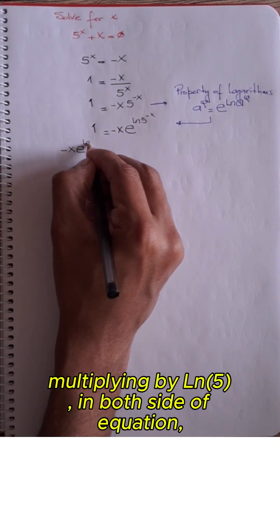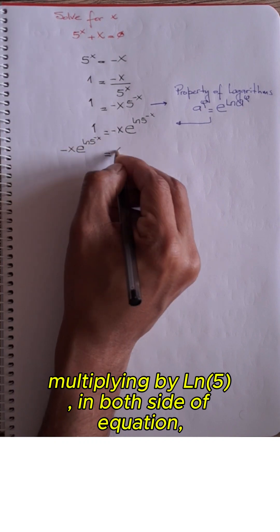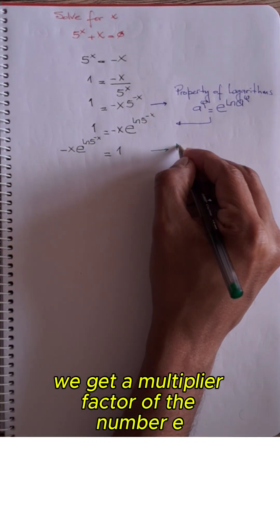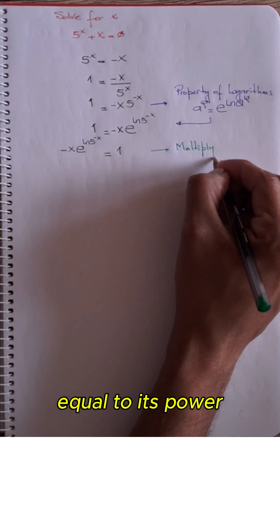Multiplying by neperian of 5 on both sides of the equation, we get a multiplier factor of the number e equal to its power.